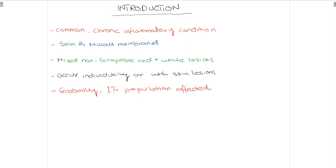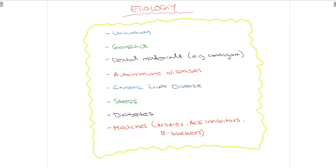Generally, talking about prevalence, oral lichen planus affects about 1% of the population worldwide. Moving on towards etiology, although mainly the etiology of oral lichen planus is unknown, there are certain contributing factors which increase the risk of developing oral lichen planus.